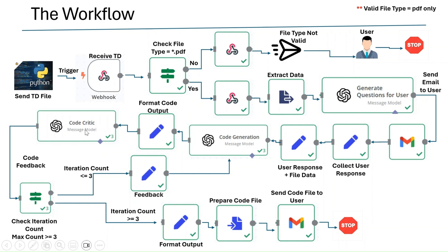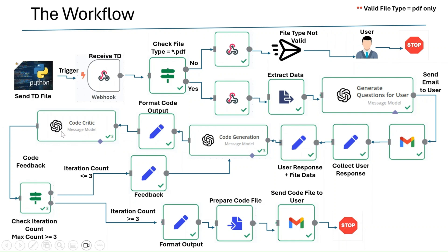Once the code is generated, the output is formatted and passed to a code critic, which analyzes the code line by line and tells the system how it can be improved. The code critic can be divided into multiple agents — one for syntax, one for formatting, one for security, etc. For this demo, I've kept just one agent covering all those aspects.